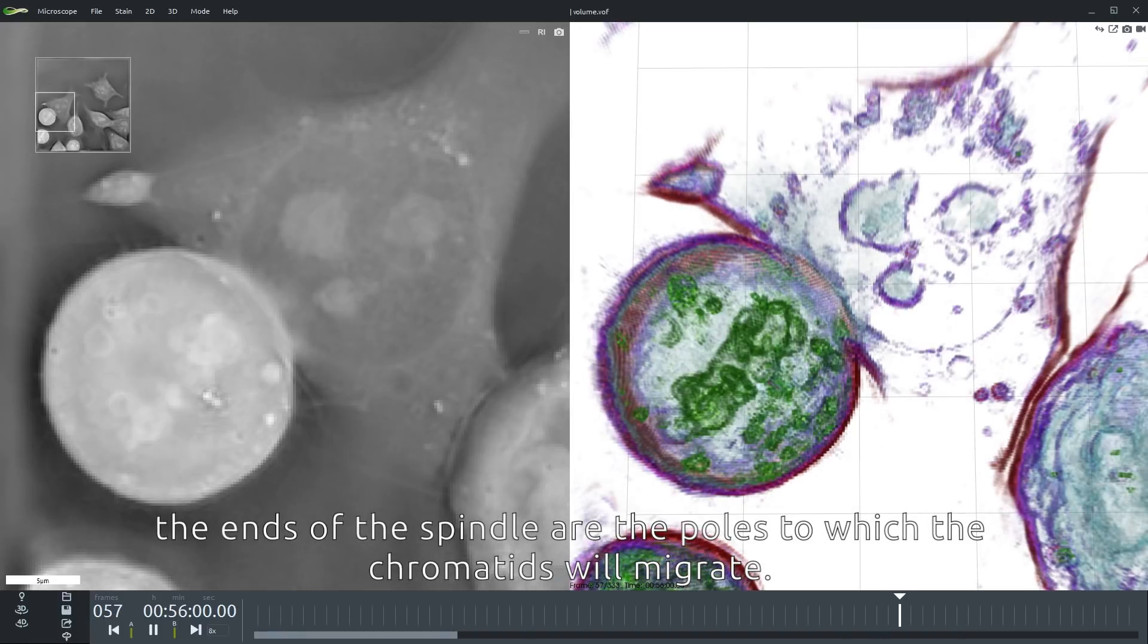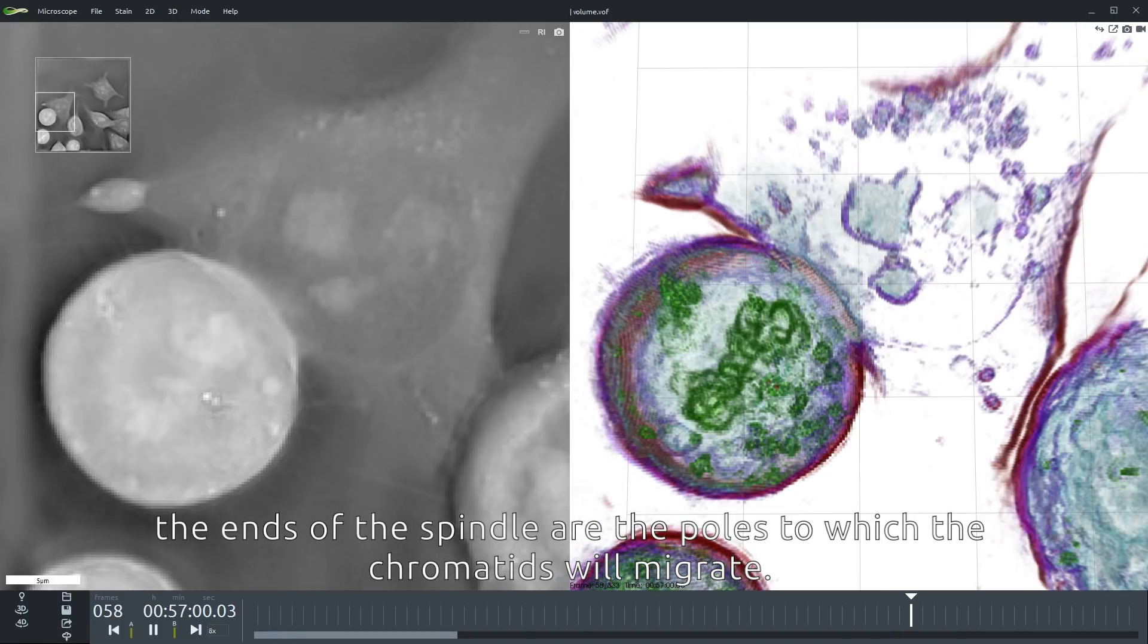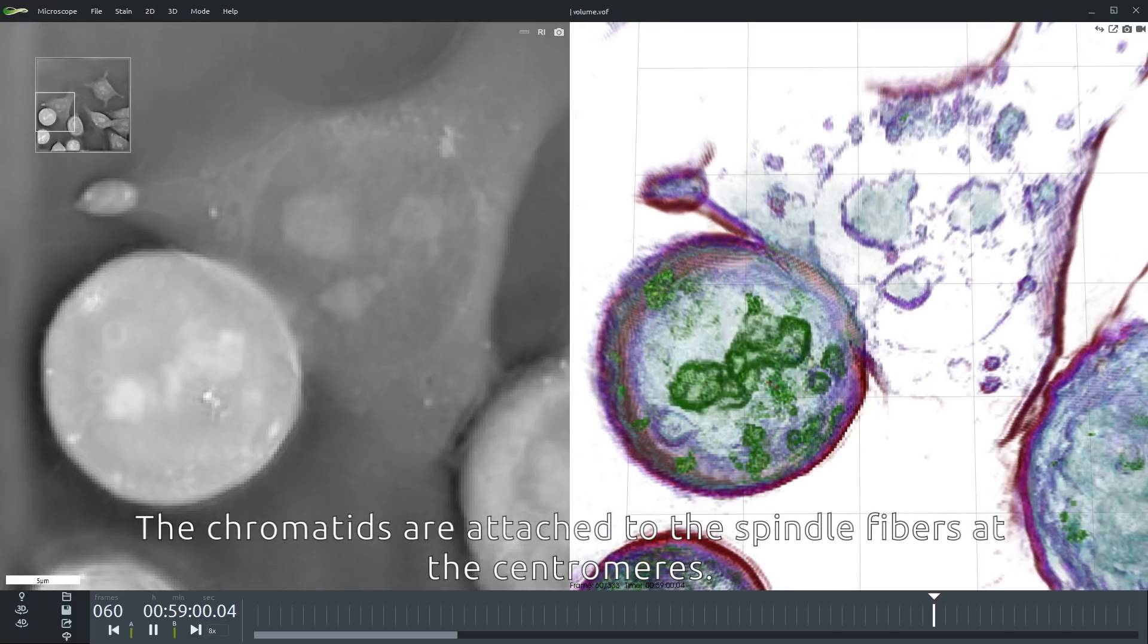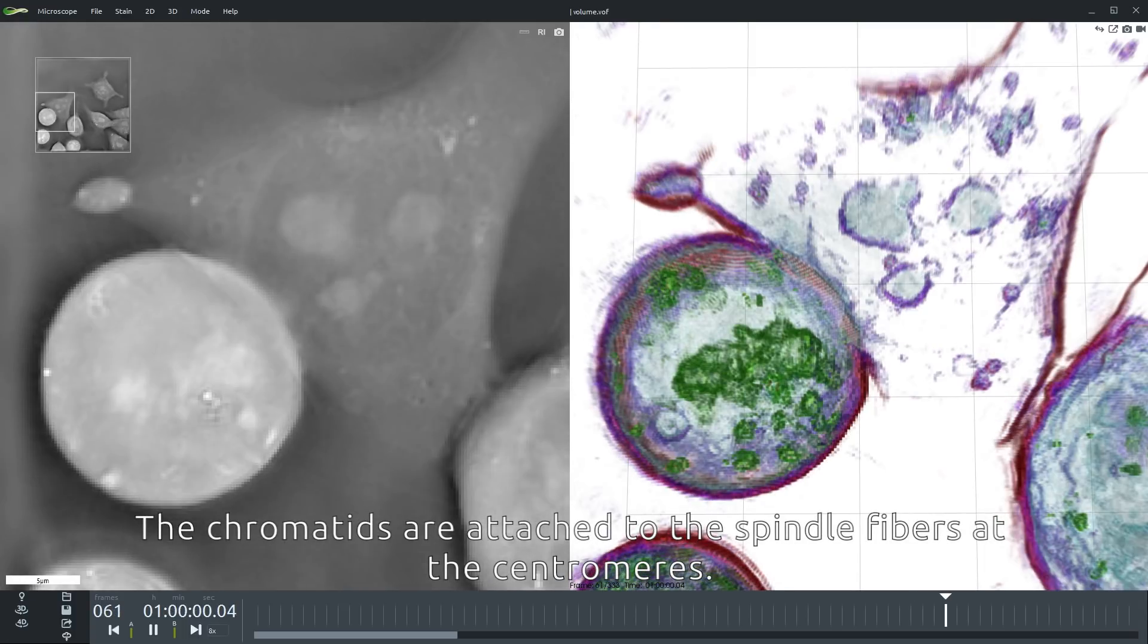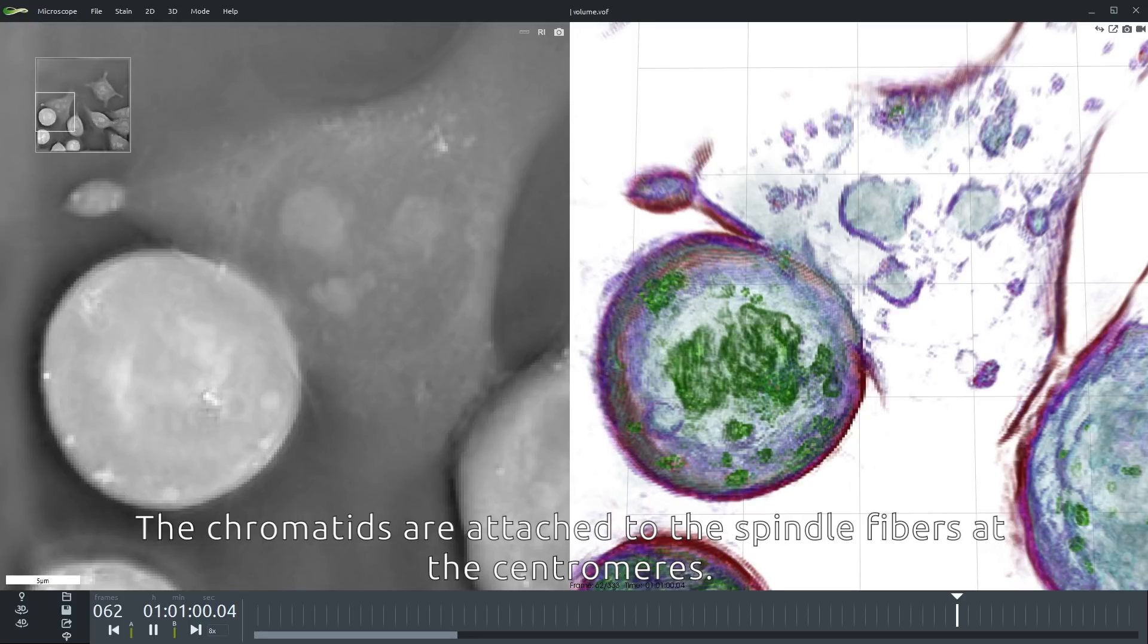The ends of the spindle are the poles to which the chromatids will migrate. The chromatids are attached to the spindle fibers at the centromere.